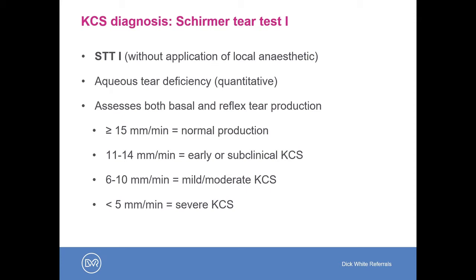Basal tear production is the low-grade constant turnover of tear production at a constant rate in normal situations, whereas reflex tear production occurs when there is a noxious stimulus to the corneal surface. Normal production is 15 mm per minute or greater. Eleven to 14 mm would be typical of early or subclinical dry eye. Six to 10 mm per minute would be diagnostic of mild to moderate dry eye, and less than 5 mm per minute would be indicative of severe dry eye.